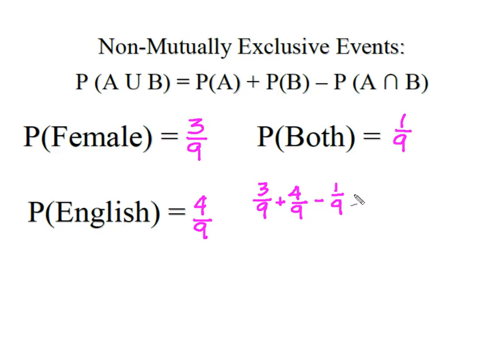So when I end up doing that, I end up with six out of nine. Because traditionally we don't talk about probabilities in terms of fractions, I would simply reduce that six over nine,